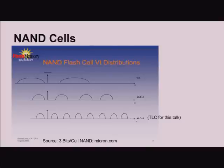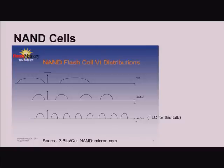Any degradation that happens — since all of the charge is put in this area, this is a probability distribution — if my threshold is here, this charge can move a fair ways before I start making errors in determining the cell. That makes SLC very reliable, but not very dense. For MLC, the area is much smaller between the nodes, so it can degrade only a little bit before I start to make errors in judgment.